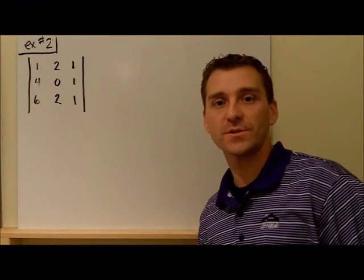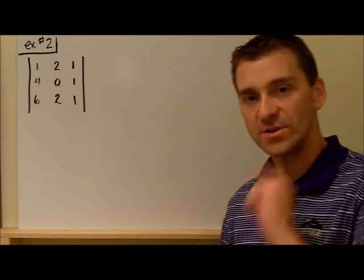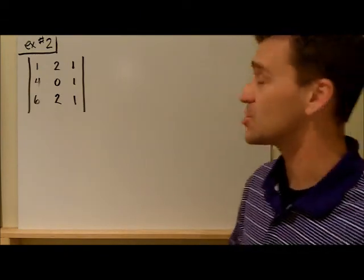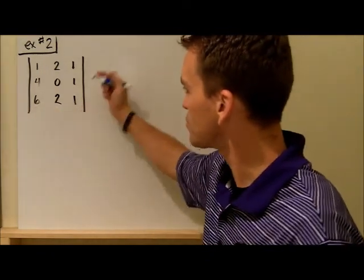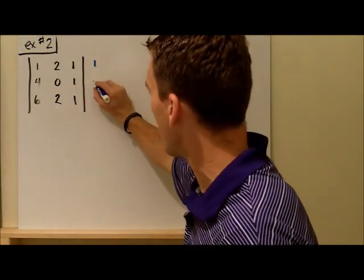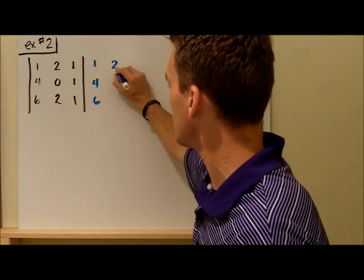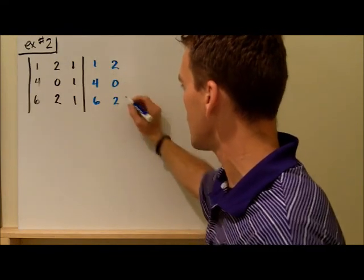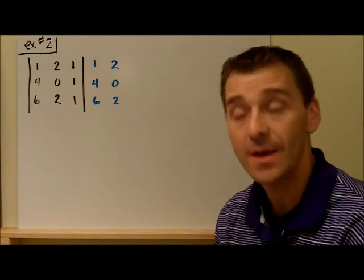Let's see if you got it right. First step: to the right of this matrix, rewrite the first two columns. So I'll put a one, a four, and a six, then a two, a zero, and a two. That is step number one.